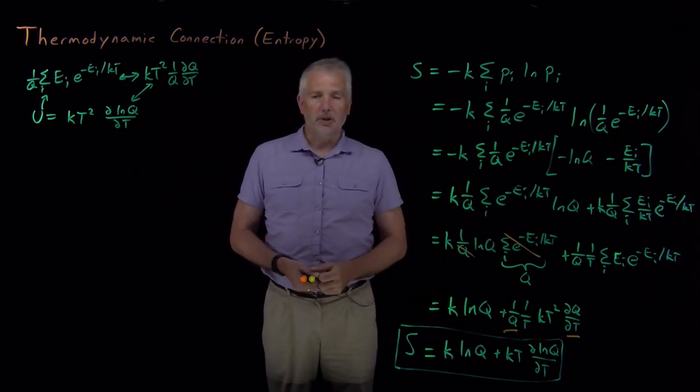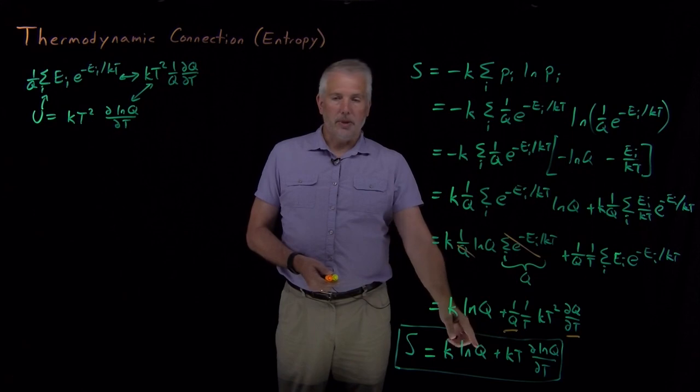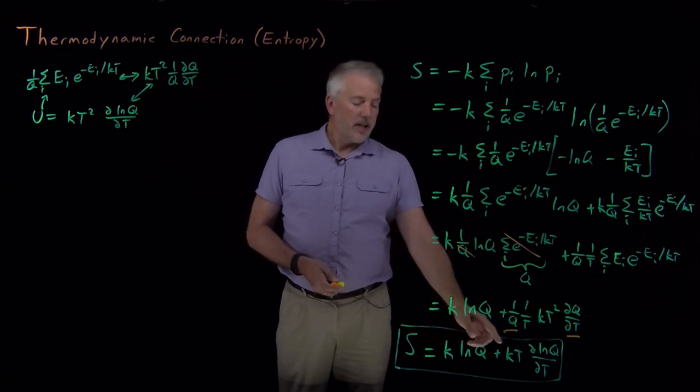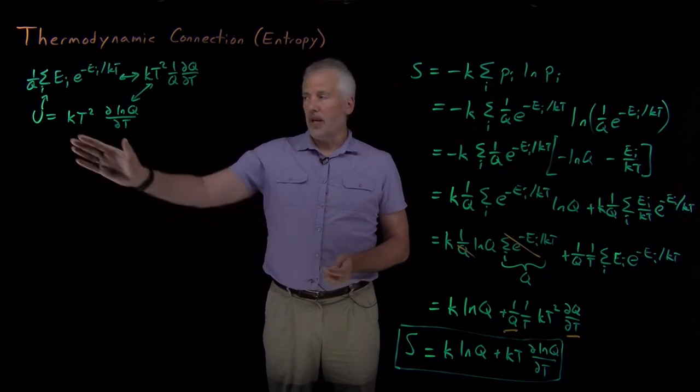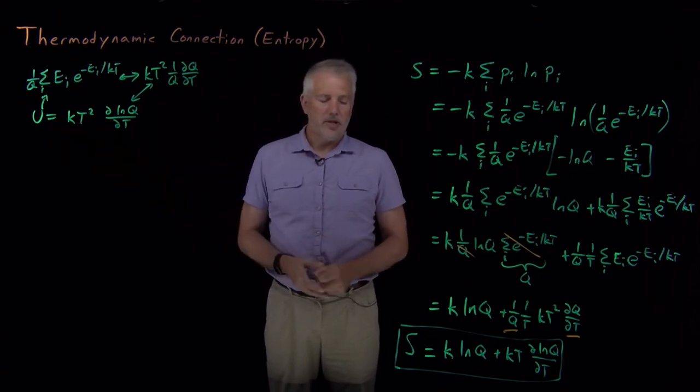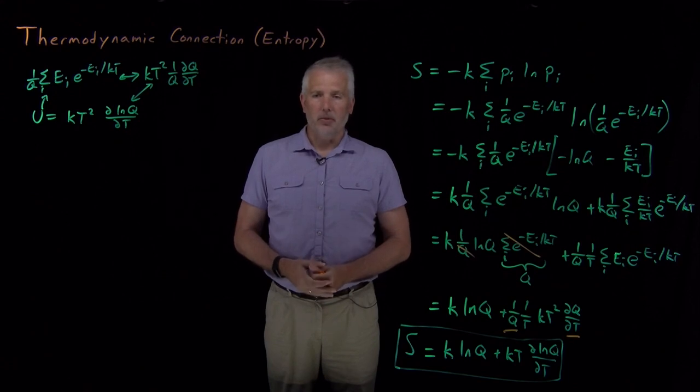After all this simplification, I'm down to what we call a thermodynamic connection formula. All I need to know now is an expression for the partition function. If I have a closed form expression for the partition function, then I can just calculate the entropy directly from the partition function. So now we've seen not only a thermodynamic connection formula for the energy, but also one for entropy. And we have one more to calculate that we'll do in the next video lecture.